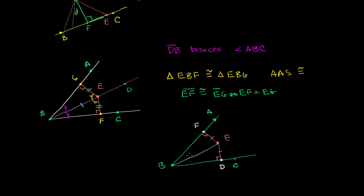So once again, we have two right triangles. We already know that two of the legs are congruent to each other. They both share the hypotenuse — this hypotenuse is equal to itself. We know from the Pythagorean theorem that if you know two sides of a right triangle, it determines the third side. And we know two sides of both of these.